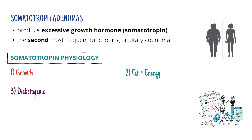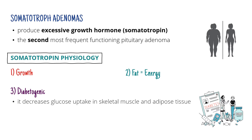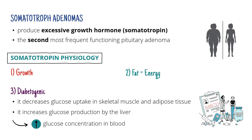Growth hormone decreases the absorption of glucose in skeletal muscle and adipose tissue, and also increases glucose production by the liver. The result is more glucose in the blood, which means we're going to need more insulin. In diabetes, patients have a very similar problem — high concentration of glucose and not enough insulin, or the tissue is resistant to it. So this creates something very similar, and that's why it's called diabetogenic.